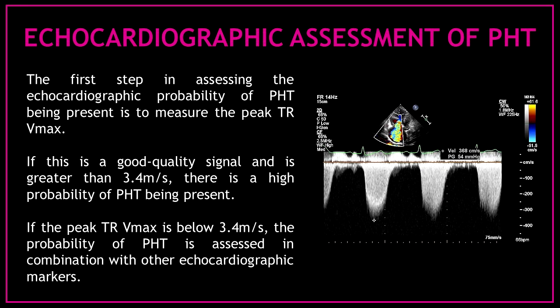The first step in assessing the echocardiographic probability of pulmonary hypertension is to measure the peak tricuspid regurgitation velocity. If this is a good quality signal and is greater than 3.4 meters per second, there is a high probability of pulmonary hypertension being present. If the peak tricuspid regurgitation velocity is below 3.4 meters per second, the probability of pulmonary hypertension is assessed in combination with other echocardiographic markers.